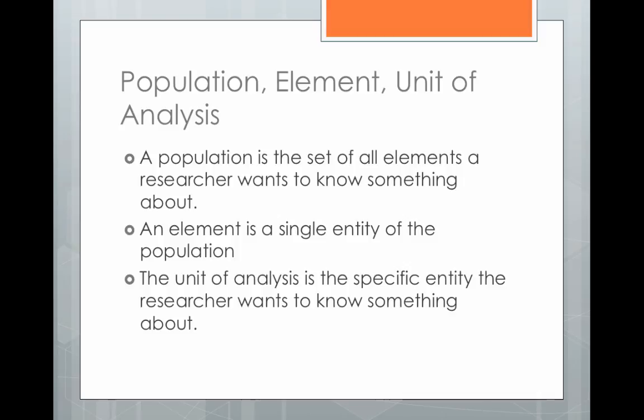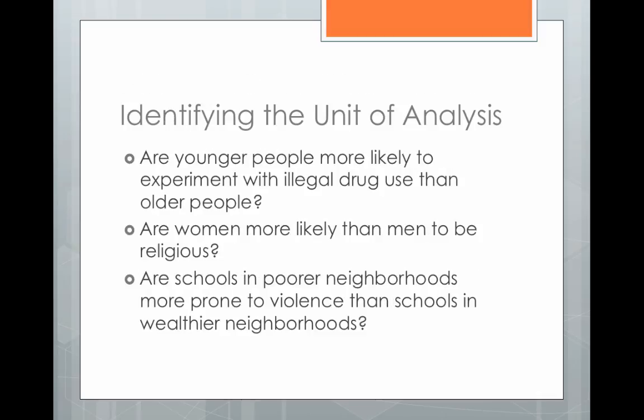The unit of analysis is the specific entity that the researcher wants to know something about. Let's do some examples. The first research question is: are younger people more likely to experiment with illegal drug use than older people? Here, our unit of analysis deals with the individual unit we want to know about — the smallest unit we're looking at. We're looking at people, younger people versus older people, so the individual is our unit of analysis.